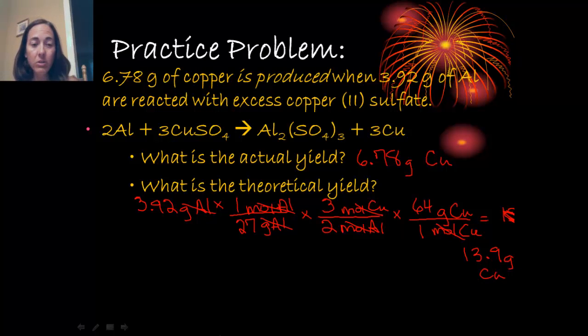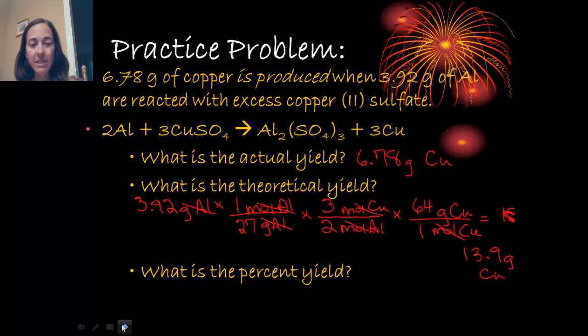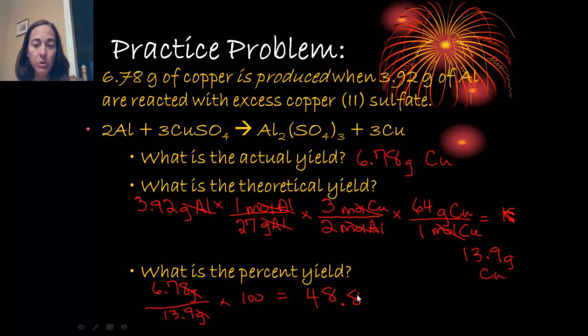Now percent yield, remember, is comparing those two. And that's the next step here. The percent yield is going to be to compare the actual yield to the theoretical yield. So let's go ahead and set that up. My actual is 6.78 grams. And my theoretical is that 13.9 grams. Now the grams are going to cancel out. And remember, you want to multiply by 100 to make it a percent in the end. So in the calculator, 6.78 divided by 13.9 times 100, that gives me a percent yield of 48.8%. And that's the percent yield for this reaction. So it's a little low. Not all of our reactant was converted to product, or something else is going on that prevents us from having a higher yield.